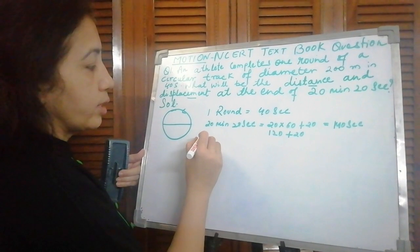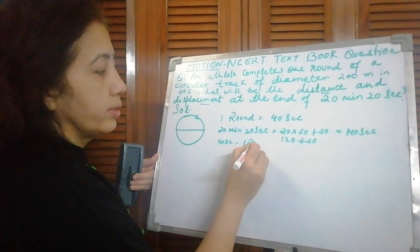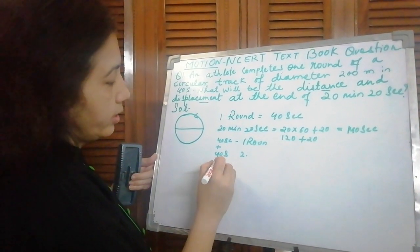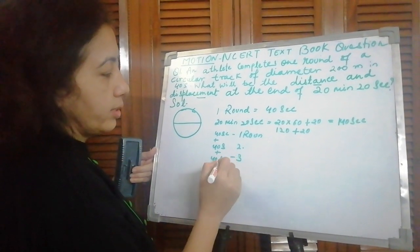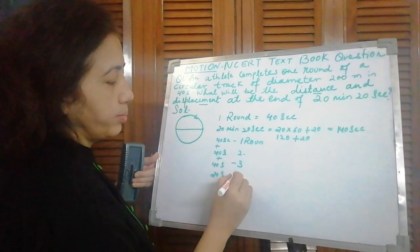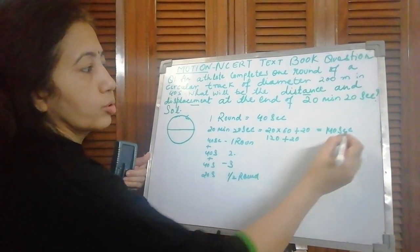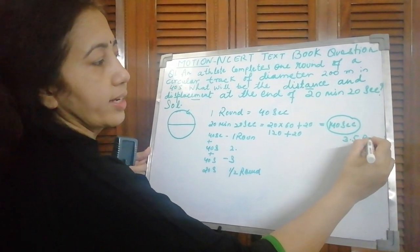140 seconds means 40 seconds one round, next 40 seconds second round, next 40 seconds third round. How many remain? 20 seconds means half round. So total in 140 seconds, 3.5 rounds.